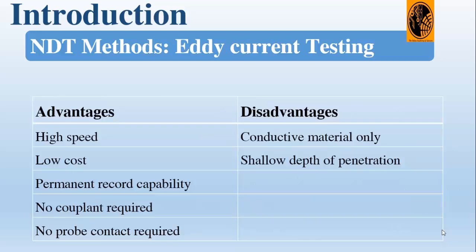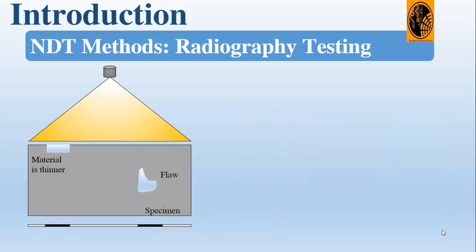Eddy currents produce their own magnetic field that can be measured and used to find flaws, and to characterize conductivity, permeability, and dimensional features. The advantage of eddy current testing is that it is a high-speed, low-cost technique that gives a permanent record and requires no couplant. The limitations are that it can only be used on conductive materials and has a shallow depth of penetration.